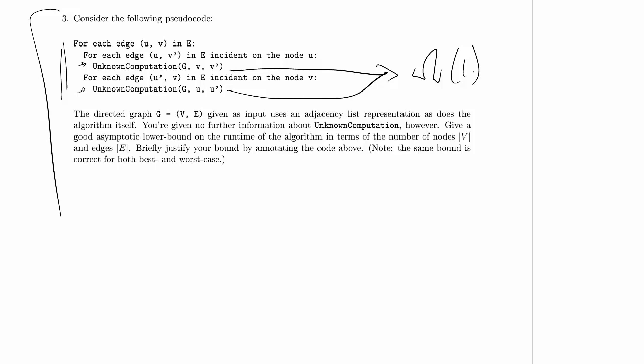We're supposed to give a good asymptotic lower bound on the runtime of the algorithm in terms of the number of nodes and edges, and briefly justify our bound by annotating the code above. And then it says the same bound is correct for both best and worst cases. And that is wrong. That is just outright wrong. Sorry about that.